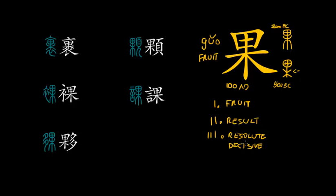The third meaning group — resolute and decisive — I thought at first might be a phonetic loan, but then I noticed that result and resolute are so close in spelling that maybe they share something in common. That's an unusual way to analyze Chinese character etymology through English spelling, but somehow result and resolute could be linked together, and subsequently all three meaning groups for this character can be traced back to the meaning fruit.